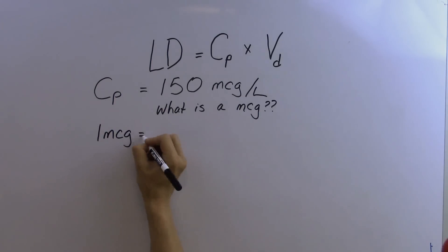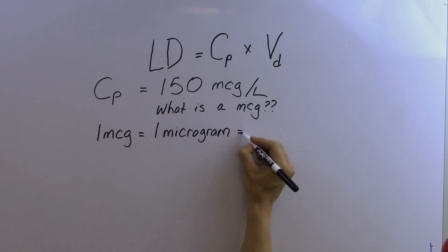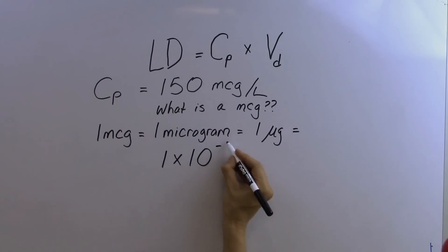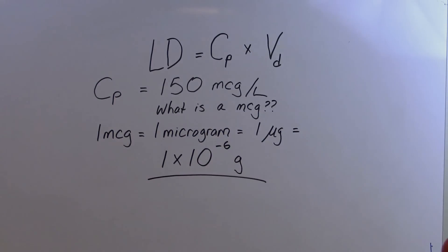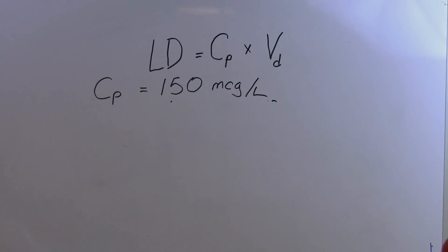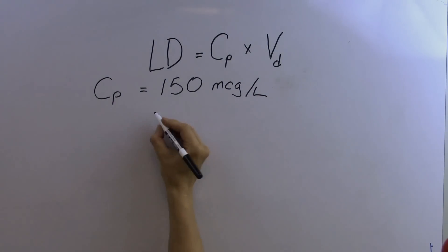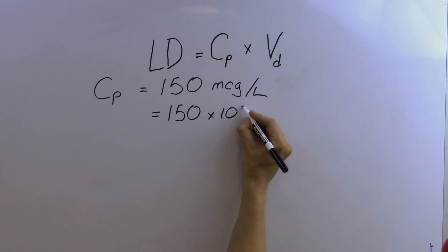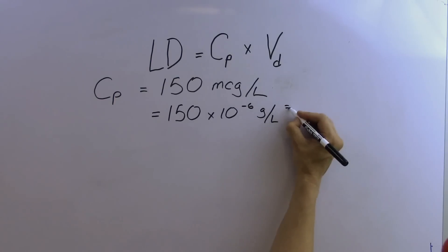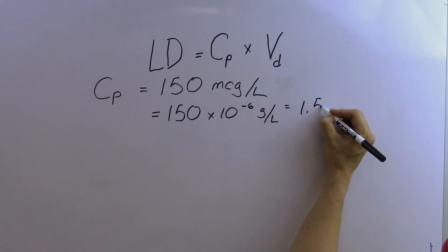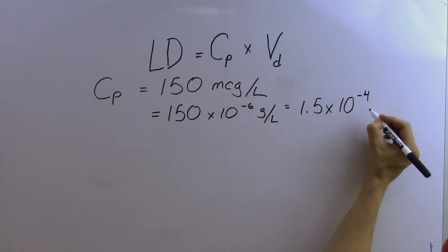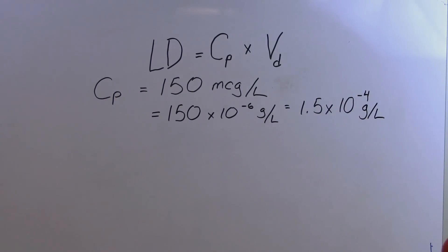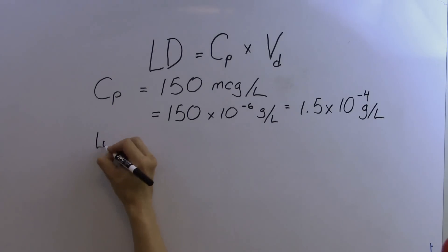One mcg, or one microgram, is equal to 1 × 10⁻⁶ grams, or 0.001 milligrams. So 150 micrograms per liter is equal to 150 × 10⁻⁶ grams per liter, or 1.5 × 10⁻⁴ grams per liter.